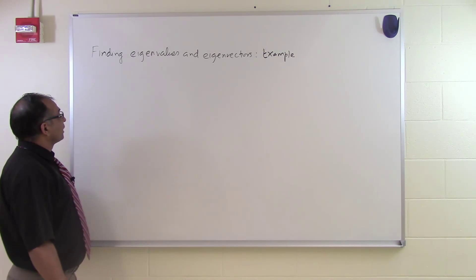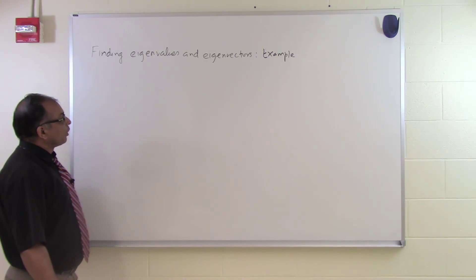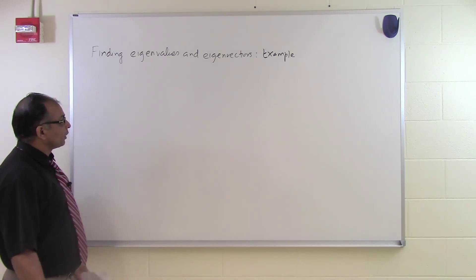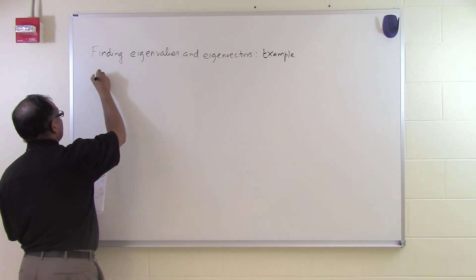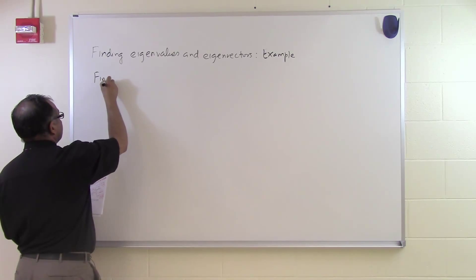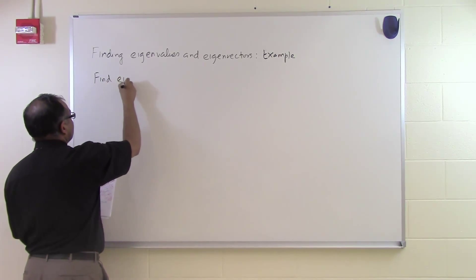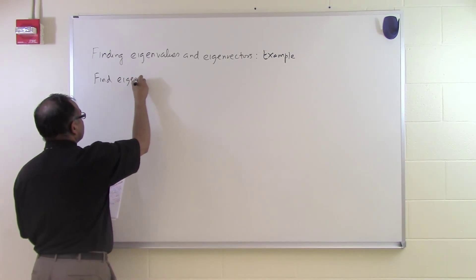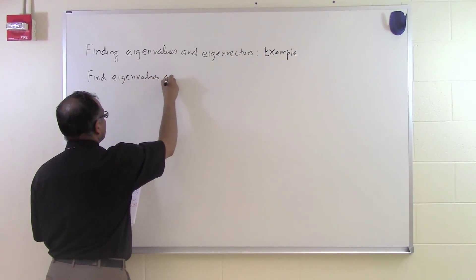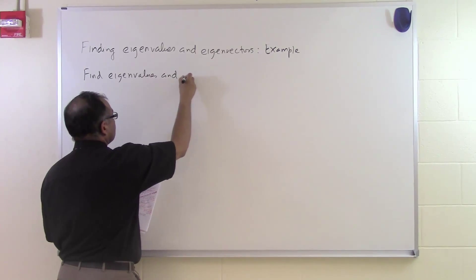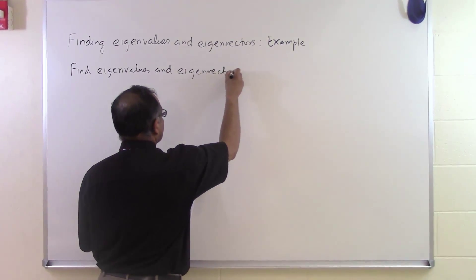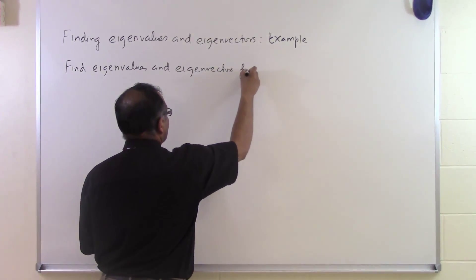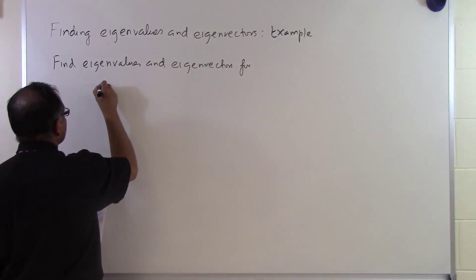In this segment, we'll take an example of how we can find eigenvalues and eigenvectors of a square matrix. So let's suppose somebody says find eigenvalues and eigenvectors for this matrix.